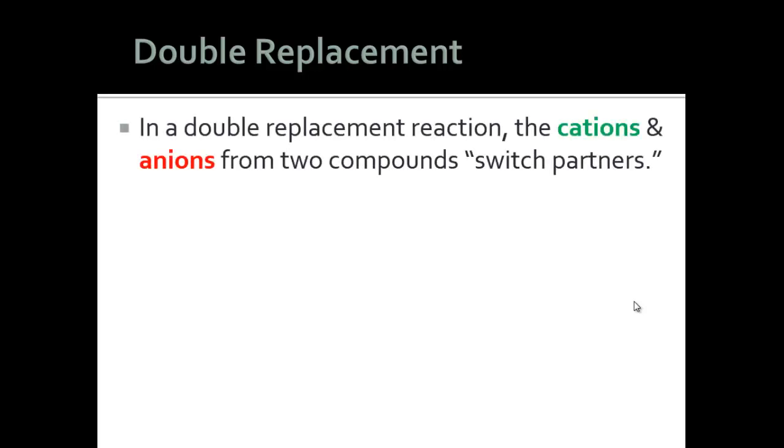In a double replacement reaction, there are two cations and two anions. We have to assume that we're working with ionic compounds, and what happens is the cations and anions switch partners to make two new compounds.